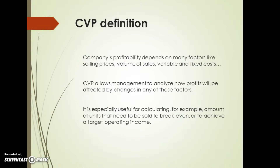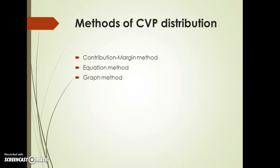These three methods are the contribution margin method, the equalization method, and the graph method. The equalization method and contribution margin method are most useful when managers want to determine operating income at a few specific levels of sales. The graph method helps managers visualize the relationship between units sold and operating income over a wide range of quantities of units sold.